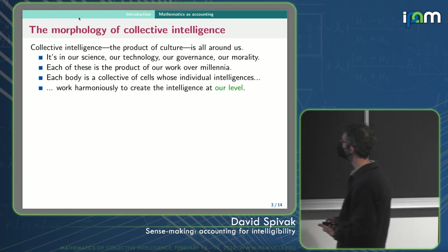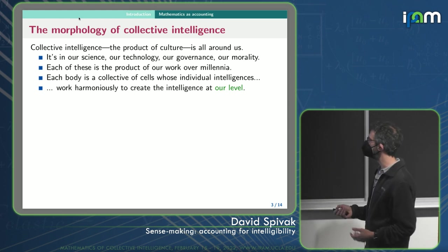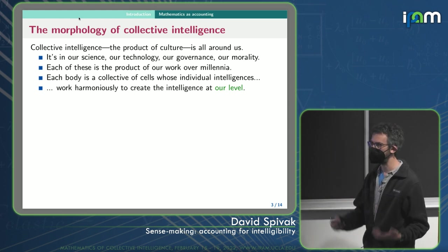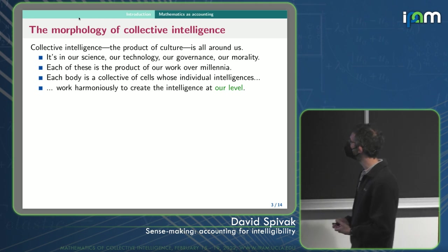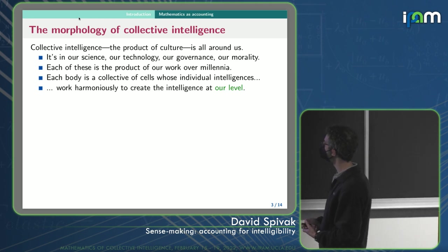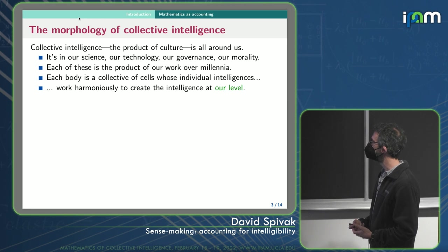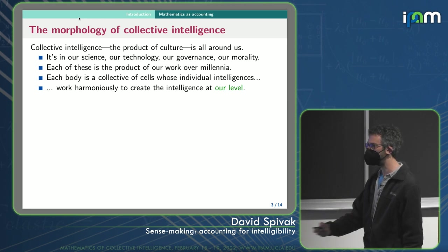And similarly, the government or technology or science, maybe even morality, like the way agents give accounts of themselves, work together to form how we're going to deal with new kinds of moral issues.